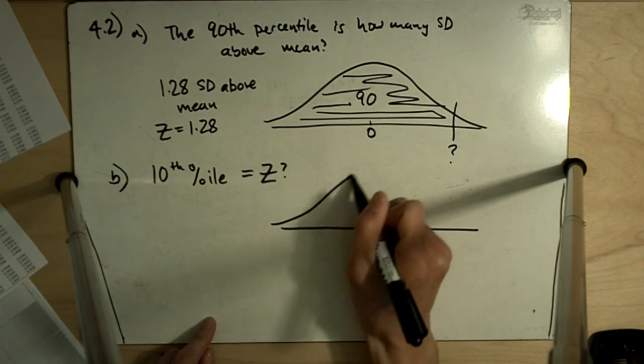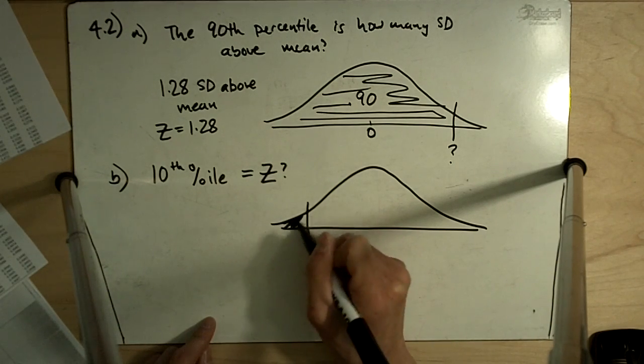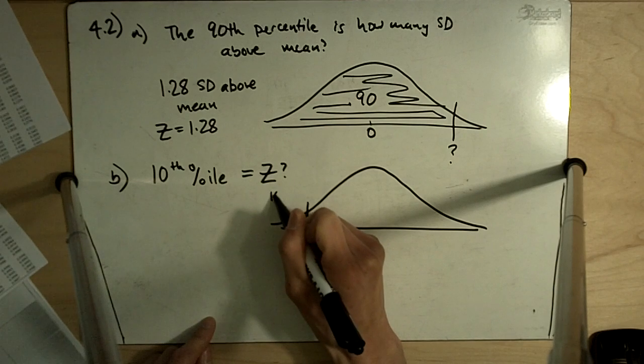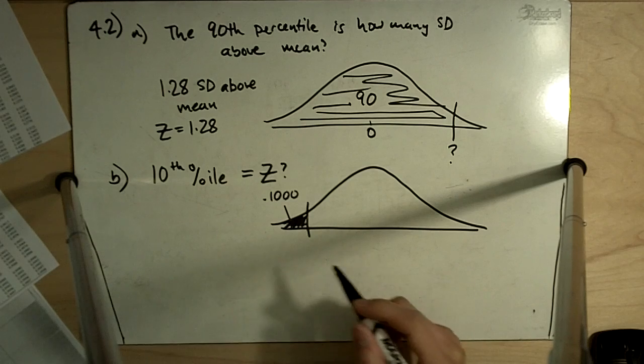So in this case, our normal distribution looks like that. We have 10% over here, and again, we can look in our table.